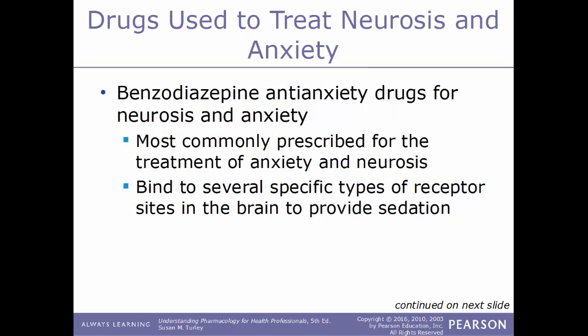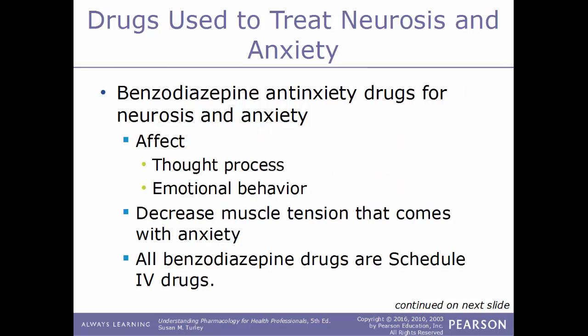The first category of drugs used to treat neurosis and anxiety are the benzodiazepine anti-anxiety drugs — the most commonly prescribed type for treatment of anxiety and neurosis. These work by binding to specific receptor sites in the brain to provide sedation. This category affects a person's thought processes and emotional behavior, and can also decrease muscle tension that comes with anxiety.